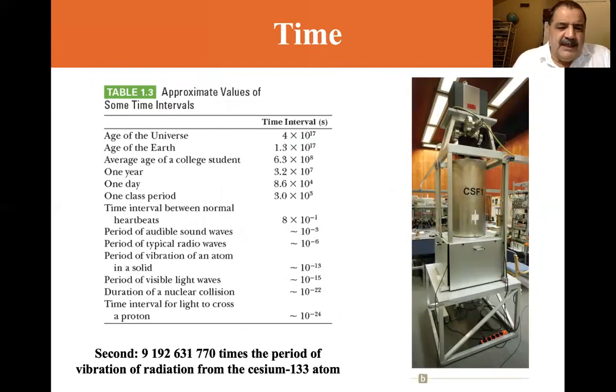Time. A second is 9,192,631,770 times the period of vibration of radiation from the cesium-133 atom. Let's look at some times. The age of the universe, 4 times 10^17 seconds. Age of the earth, 1.3 times 10^17. Average age of a college student, 6.3 times 10^8. One year, 3.2 times 10^7 seconds.